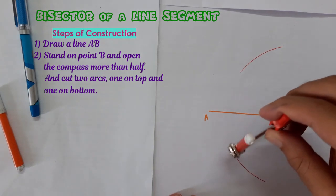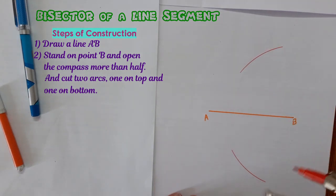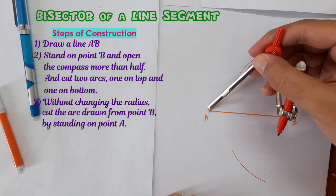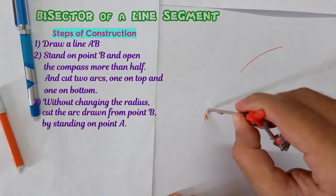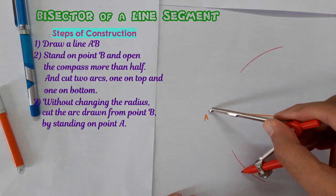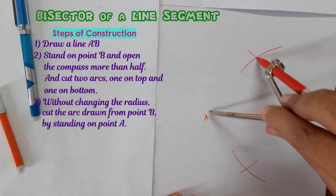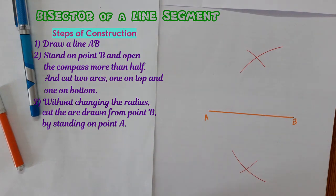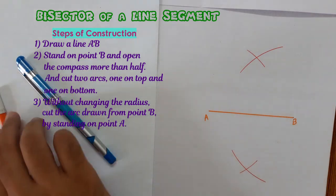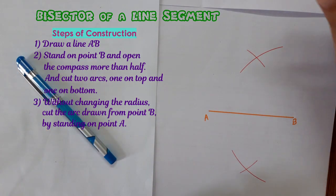Without changing the radius, stand on other point, other end of the line. Cut the arc, cut both the arcs. And what you just need to do is to join these two lines.